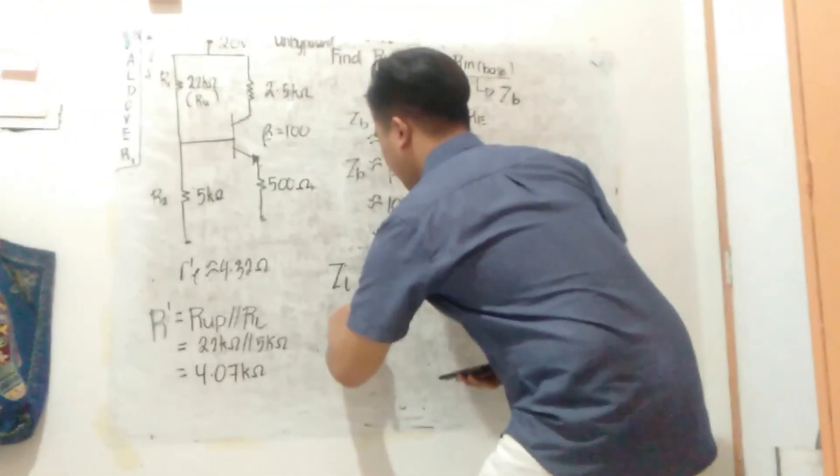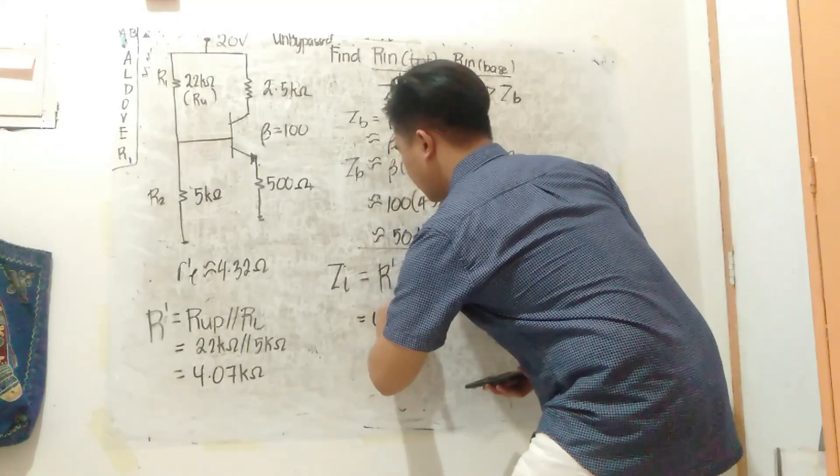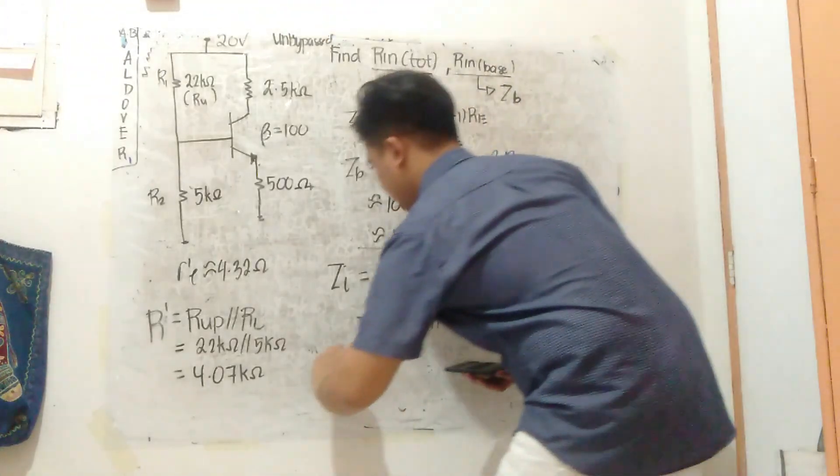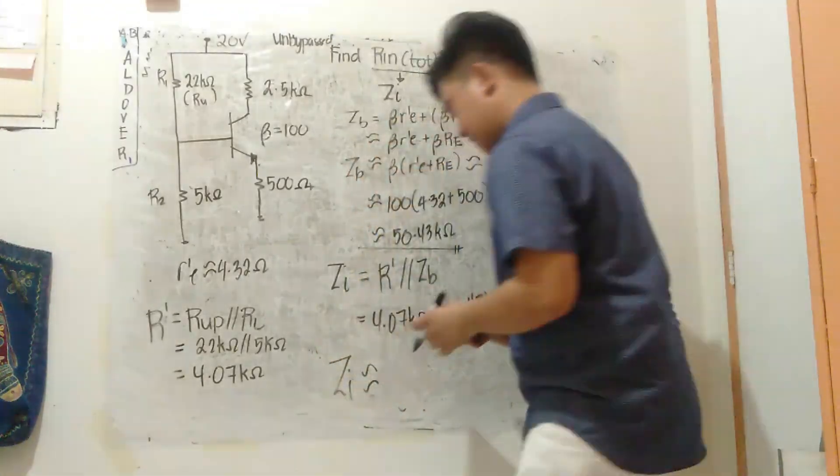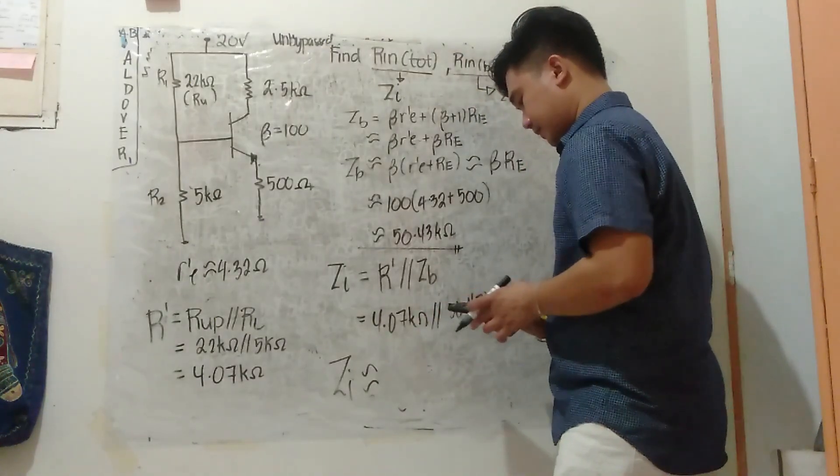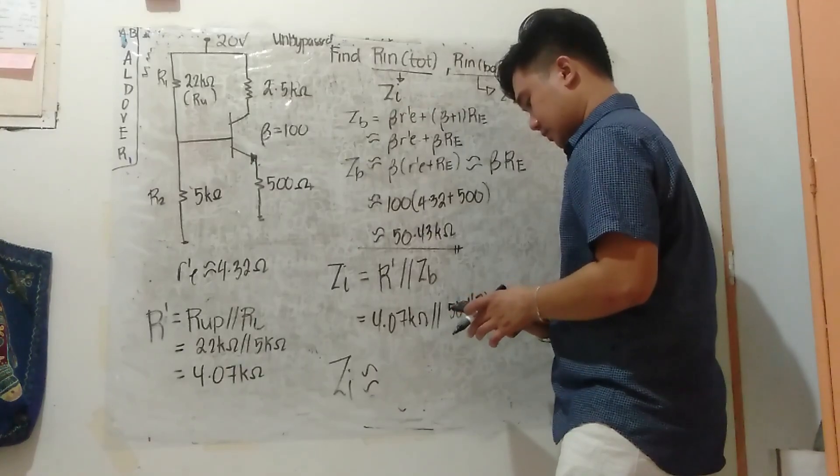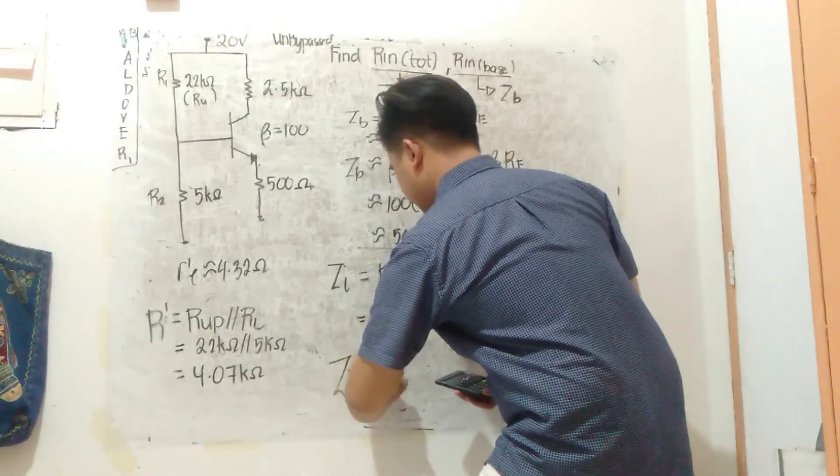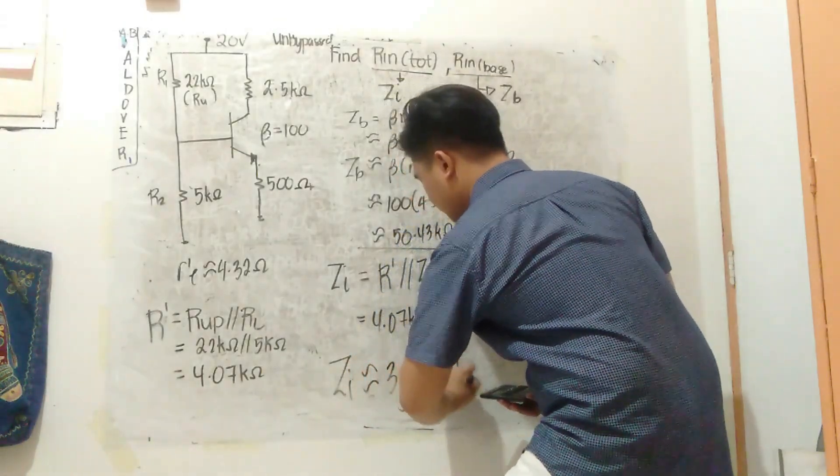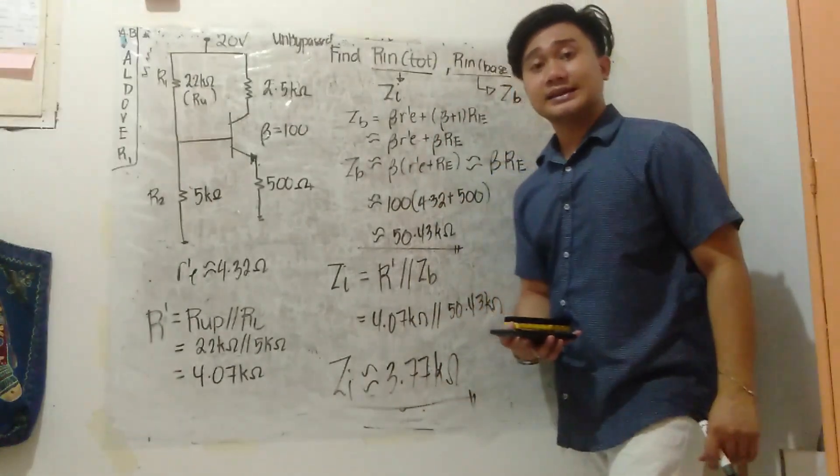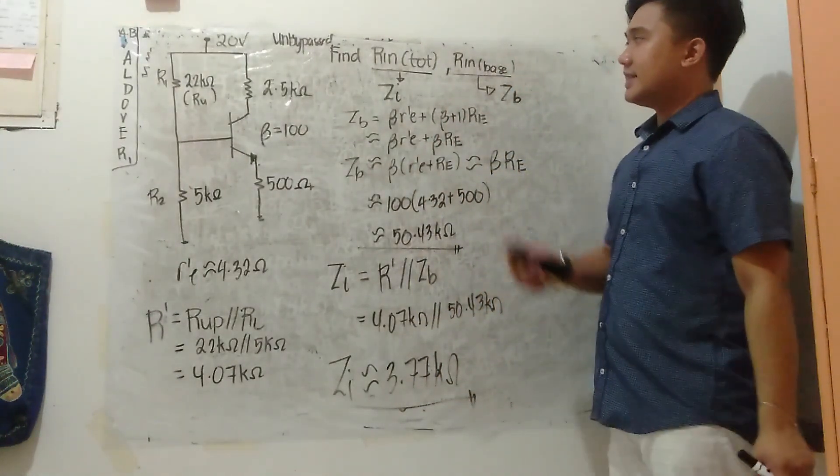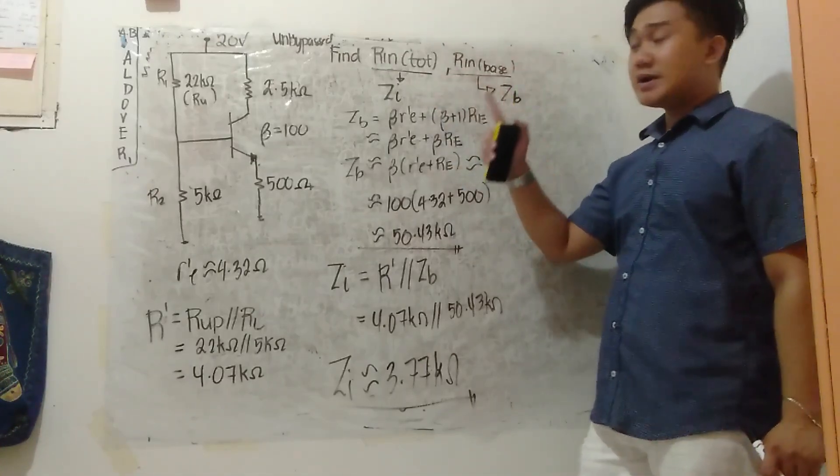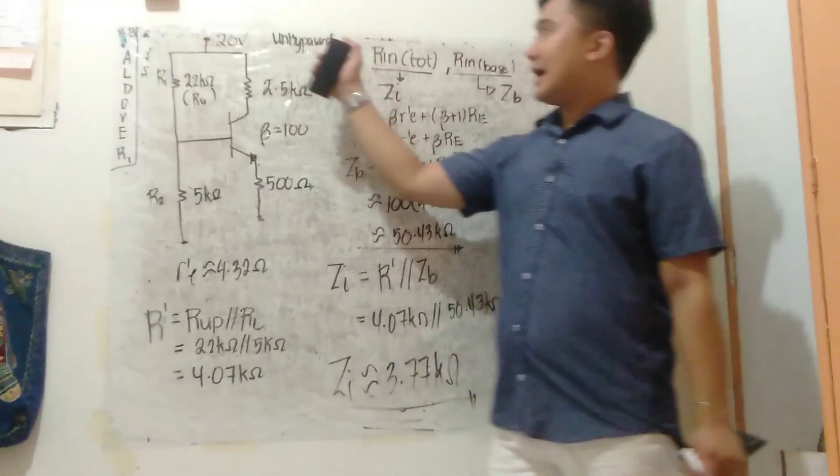So R prime is simply R upper parallel with R lower, or R1 parallel with R2. That is 22 kilo ohms parallel with 5 kilo ohms, which equals 4.07 kilo ohms. So this is 4.07 kilo ohms parallel with 50.43 kilo ohms. ZI is approximately equal to 3.77 kilo ohms, and our answer is 3.7 kilo ohms.